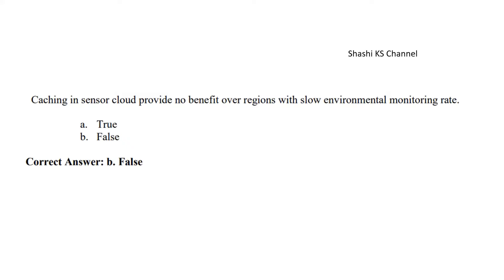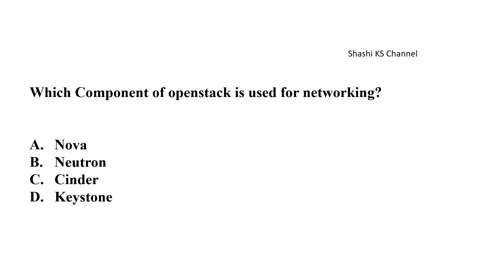Next question, caching in sensor cloud provides no benefit over regions with slow environmental monitoring rate. The right answer to this is, it is a false statement. Next question, which component of OpenStack is used for networking? So Nova component is used for compute. Cinder is used for block storage and the keystone is used for identity. So the neutron component is the right answer for this. Neutron component of OpenStack is used for networking.